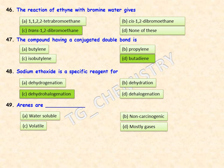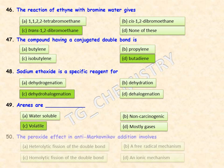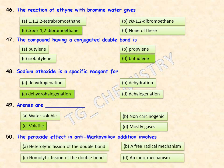Are arenes water-soluble, non-carcinogenic, volatile, or mostly gases? Arenes are volatile compounds, so option C is the right answer. The last question of Set 1: the peroxide effect in anti-Markovnikov addition involves which mechanism?